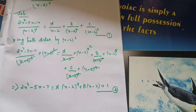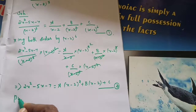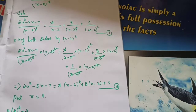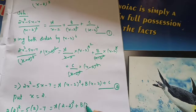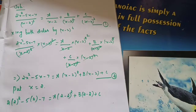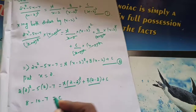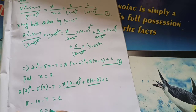If I substitute x equals 2, the first two terms become zero. Put x equal to 2: 2 into 2 squared minus 5 into 2 minus 7 equals A into 2 minus 2 whole squared plus B into 2 minus 2 plus C. So 8 minus 10 minus 7 equals C alone, giving minus 9 equals C, so C equals minus 9.